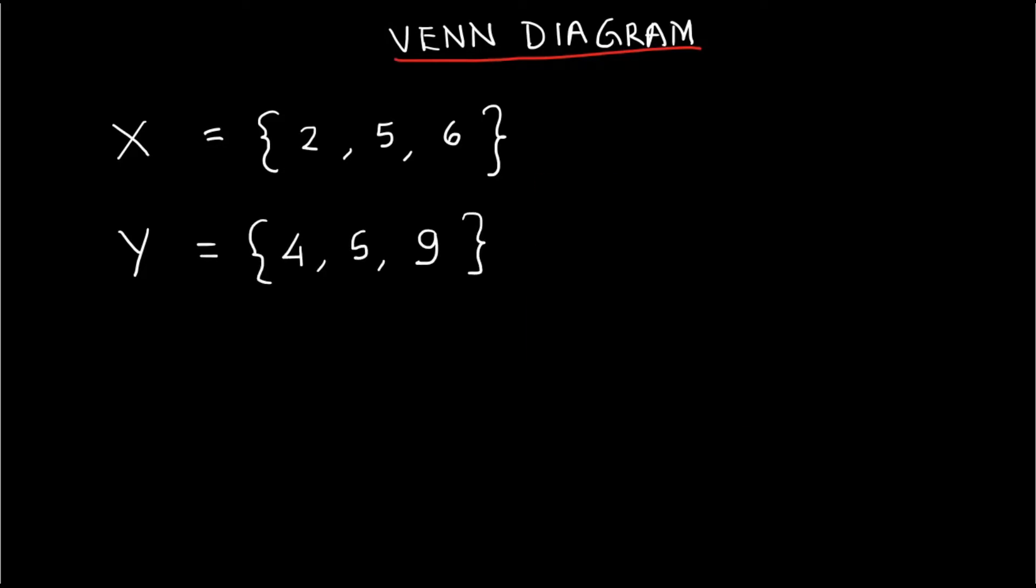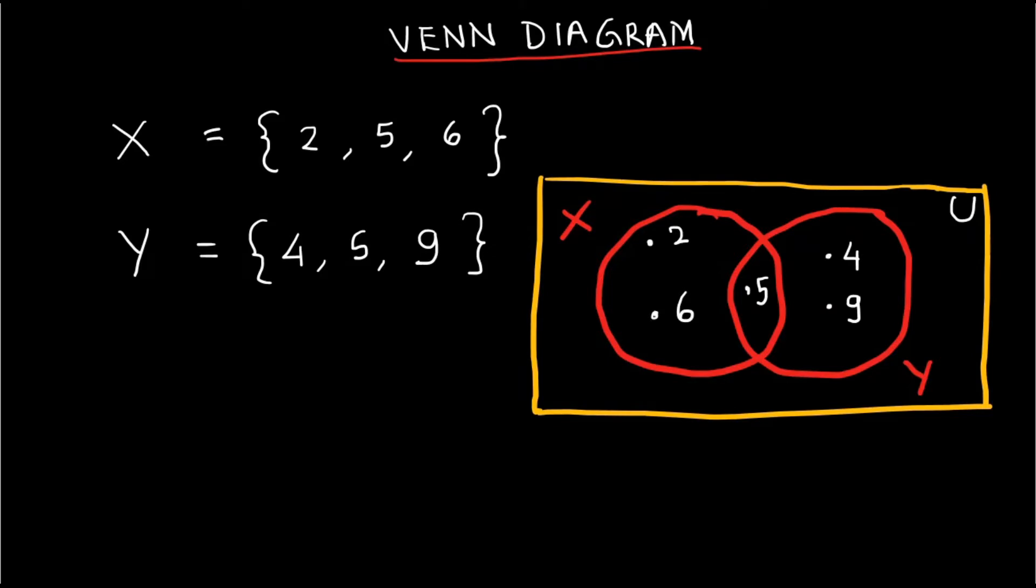If we construct these two sets using Venn diagram, the circles that represent these two sets are overlapping. It is because they have a common element 5. The elements are shown as dots in Venn diagram.